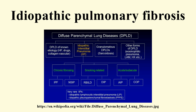However, these disorders frequently affect not only the interstitium, but also the airspaces, peripheral airways, and vessels. Lung tissue from people with IPF shows a characteristic histopathologic pattern known as usual interstitial pneumonia. UIP is therefore the pathologic counterpart of IPF.